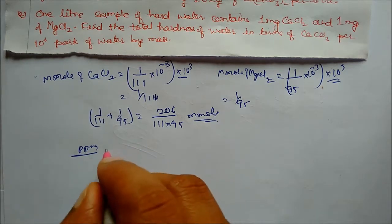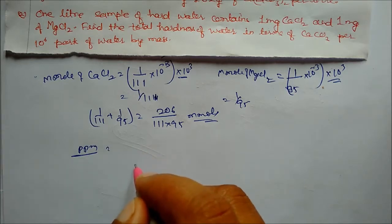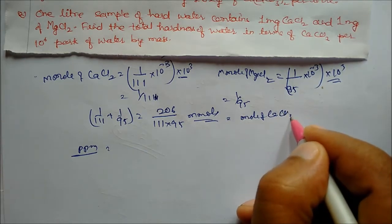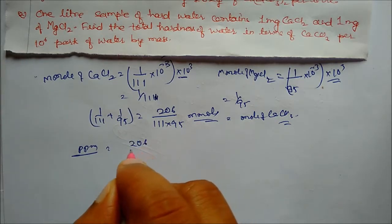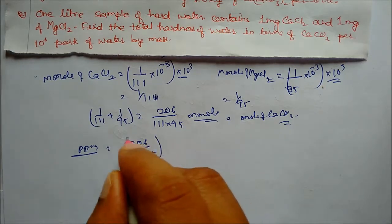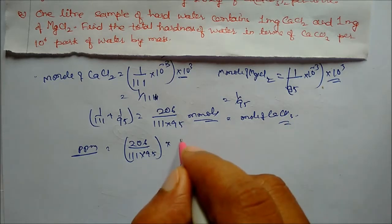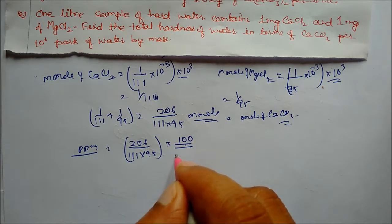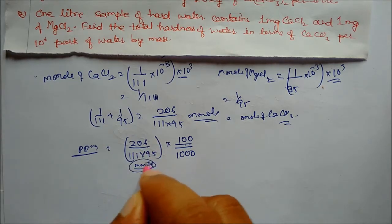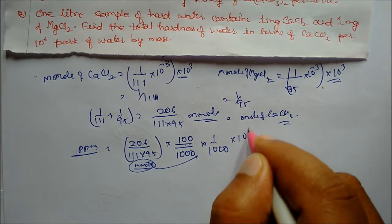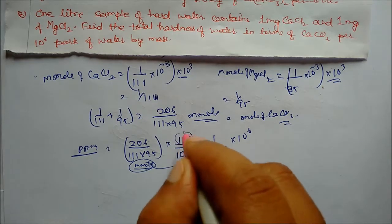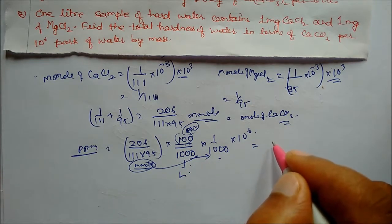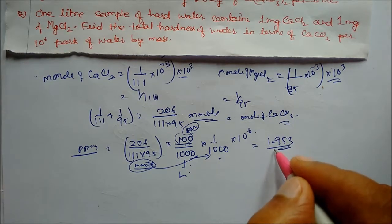PPM is weight of calcium carbonate by weight of water multiplied by 10⁶. Moles of CaCO₃ equal the total millimoles calculated: 265/(111 × 95). Weight of calcium carbonate = moles × molar mass (100), divided by 1000 to convert millimoles to moles, then multiplied by 10⁶ for ppm. Solving gives the answer 1.953 ppm. This is our answer for question two.